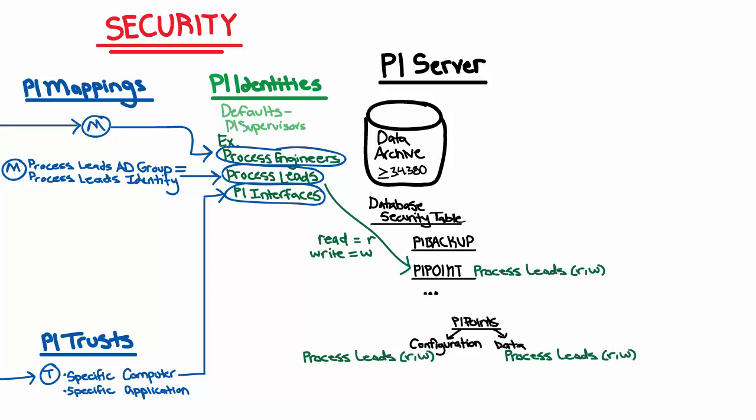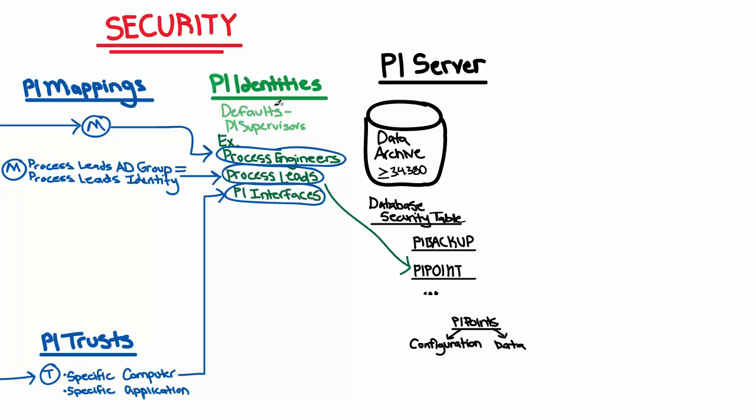Now we've discovered what those areas are. There's the database security table, and that is divided into different areas like PI Backup and PI Point. The PI identities get assigned read, write, or no access on these different areas, and that dictates what they're authorized to do. In addition to the database security table, which covers high-level access in certain areas, there may be settings on individual objects as well, like in the case of PI Points where there's individual security access set up for both configuration and data. Since the PI identities are the ones getting assigned these permissions, let's now focus on the default PI identities and what permissions they may or may not have predefined on new systems.